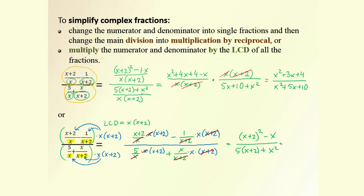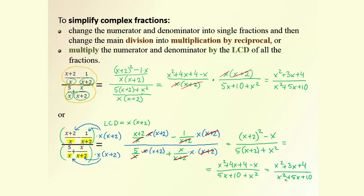What's left is to square the binomial, collect like terms, and simplify: we get x² + 4x + 4 − x over 5x + 10 + x², which is x² + 3x + 4 over x² + 5x + 10 — the same result as method 1. Please try both methods and see which works better for you.